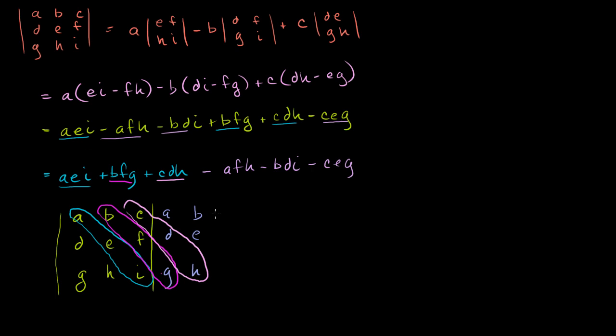Now where are these guys? Where is the AFH? AFH, it's that one right there. So you subtract out AFH, and then you subtract out BDI. BDI is that one right there. And then you have CEG, which is? CEG is this one right there.